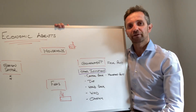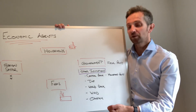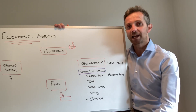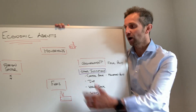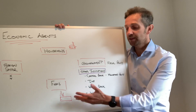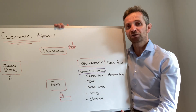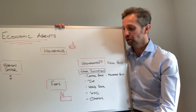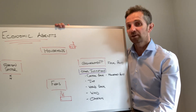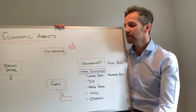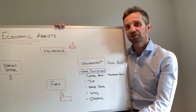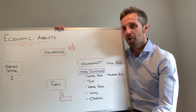Secondly, we think about the firm and its role as an employer of labour, which obviously comes from the households. The firms obviously produce goods and services which the households consume. So we think about the production element of the firm, the employment element by the firm, and the supply of goods and services into the market.